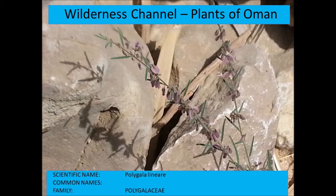Polygala linearis — another Polygala species with a very characteristic flower with a plume-like staminode column.